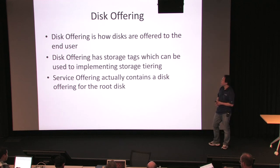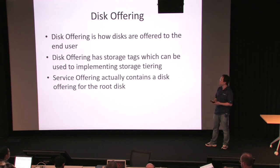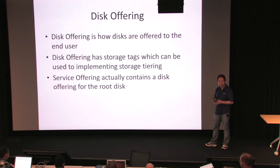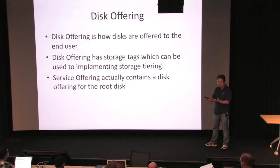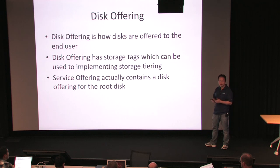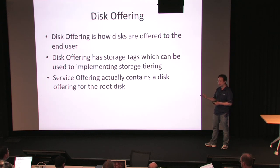The disk offering is how an operator shows end users what type of disk they're using — it has things like size. Our service offering in CloudStack actually contains a disk offering for the root disk; that's something most people do not know. So the service offering contains CPU and memory, but it also has disk characteristics for the root disk.